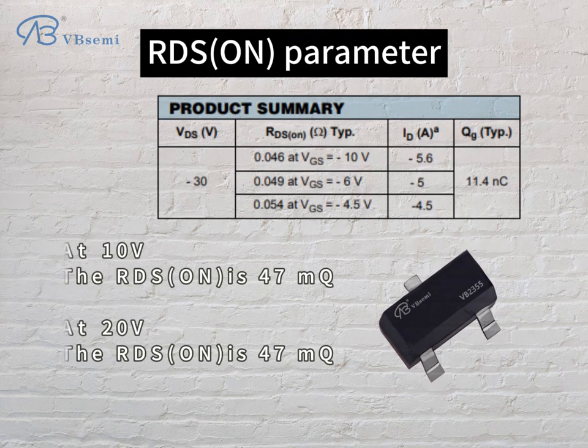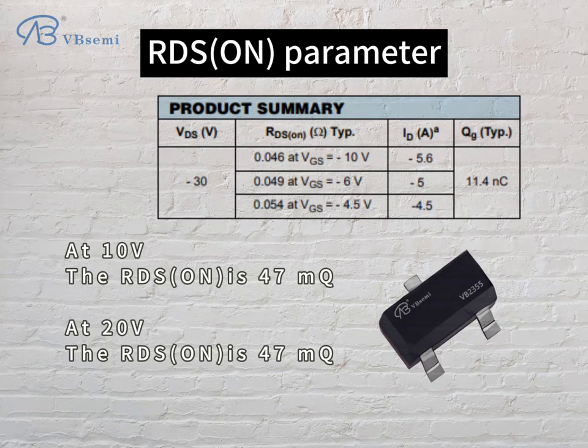RDS(on) parameters: at 10V, RDS(on) is 47mΩ; at 20V, RDS(on) is also 47mΩ.